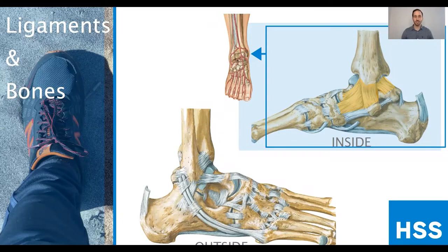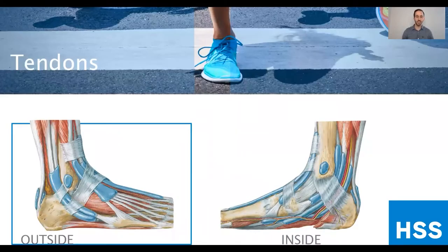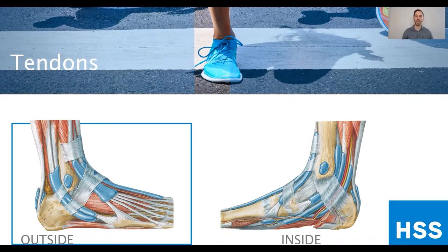Let's look at some of the tendons in the foot and ankle. There are many different tendons and muscles coming from the calf into the ankle that help with push-off, lifting your toes, flexing your toes, and ankle stability. All of these can be injured when you twist your ankle or depending on the types of repetitive movements you're doing — both on the outside and inside of the ankle. These tendons are the structures that allow for movement; they connect the muscles to the bones.